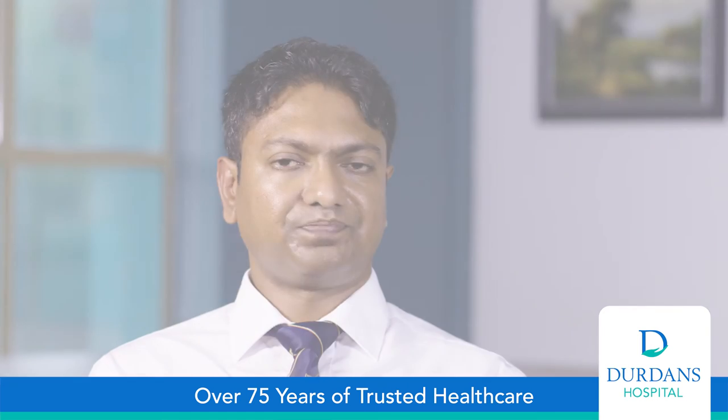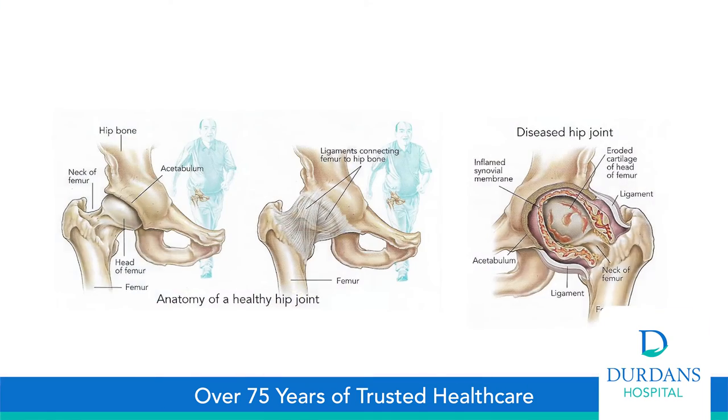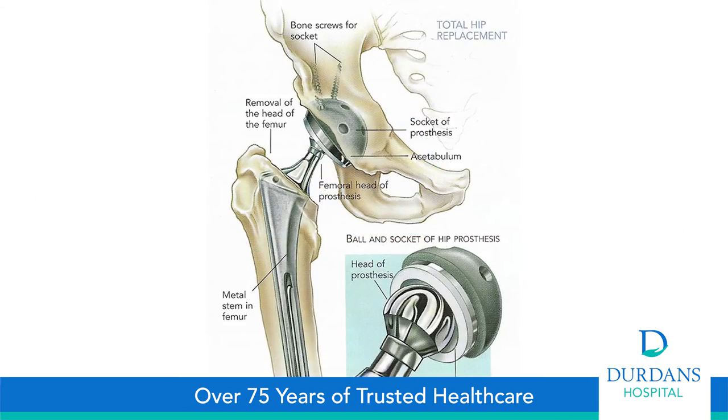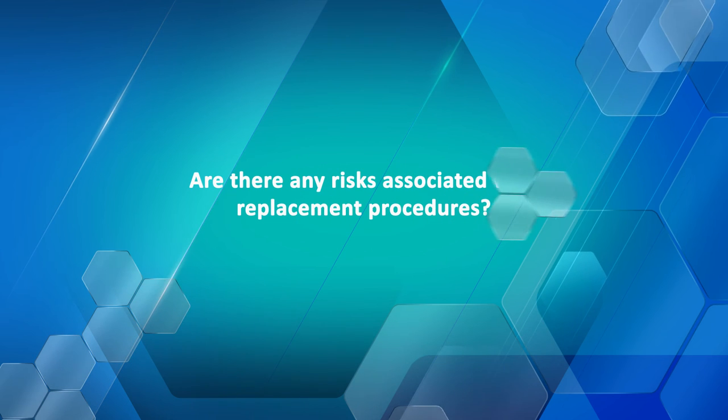Hip pain can be due to tissue damage, especially to a tissue called the labrum, which can normally be repaired using an arthroscope with minimally invasive methods. Damage to the cartilage of the hip can be managed using platelet-rich plasma as well as stem cell grafting. In the case of severe arthritis or death of the bone following a fracture, a hip replacement is necessary. Here at Durden's we specialize in looking after even the most elderly patients with significant co-morbidities who have hip fractures requiring hip replacement, with many years of successful results.